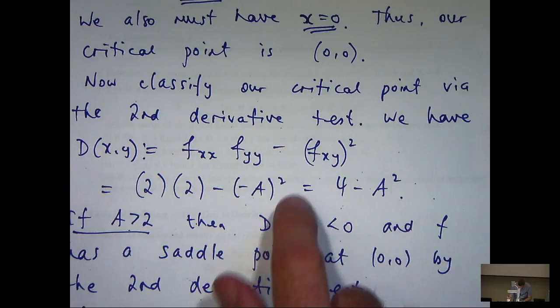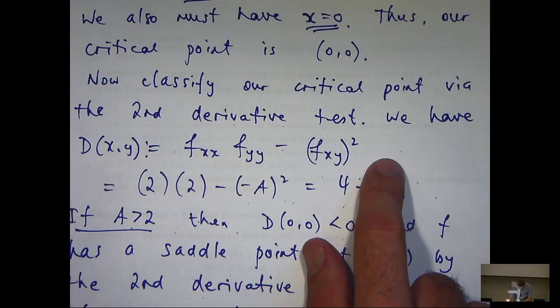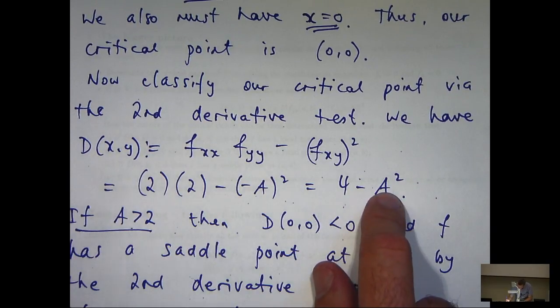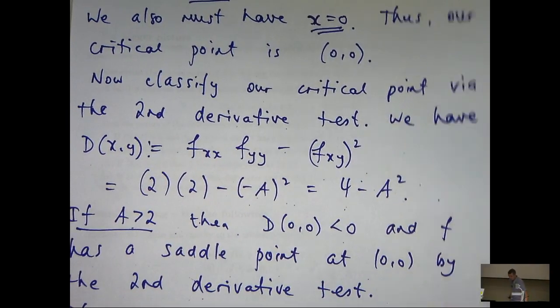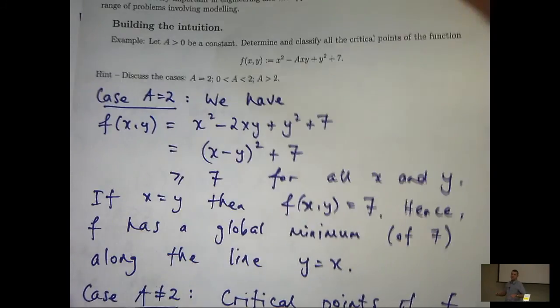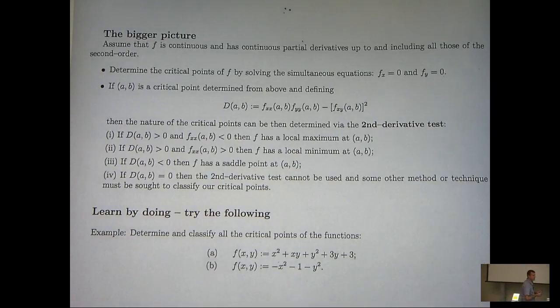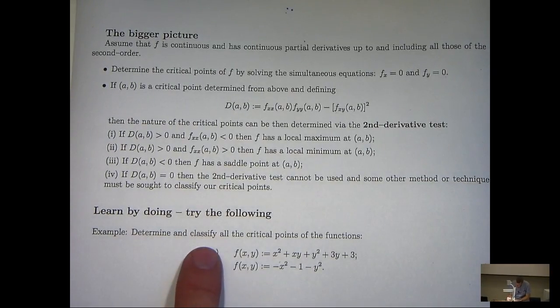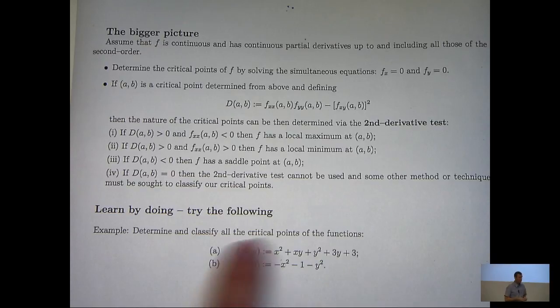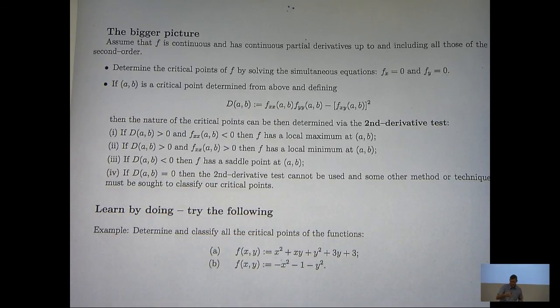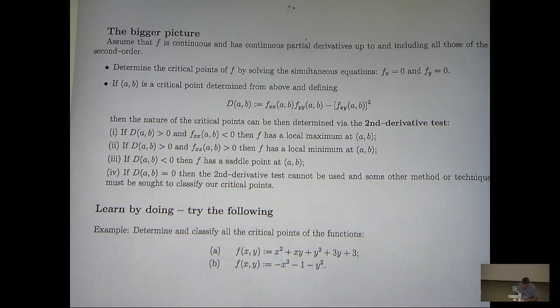In this last discussion, we ruled out the case a equals 2. Now, if a equals 2, then this is 0, so actually the second derivative test would fail if you didn't take the case a not equals 2 separately. And that comes back to the hint up here. So, it's important that you learn by doing. Here's some examples that I've left with you to try to determine and classify the nature of the critical points of these functions. You'll find that the first one is very similar to the example that I've done, and the second one, a little bit trickier.